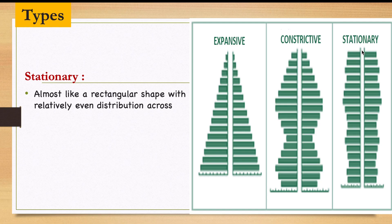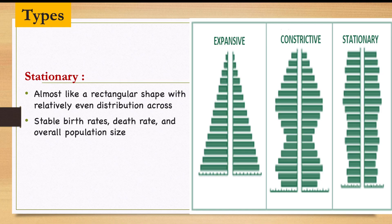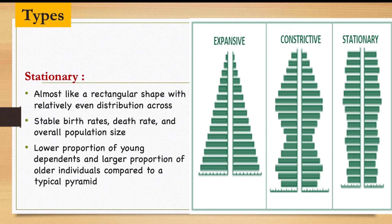The stationary pyramid indicates a stable birth rate, stable death rate, and stable overall population size. Countries with this situation can actually make decisions because they know the growth rate does not change drastically, so they can use their stable numbers to plan for their country.